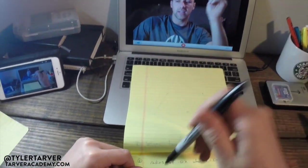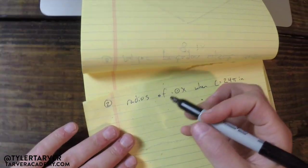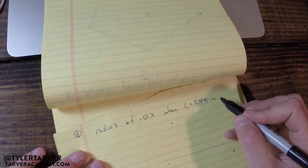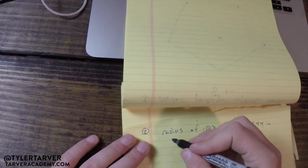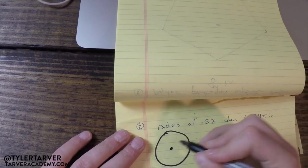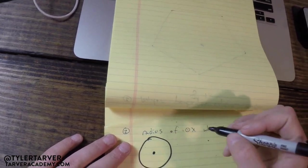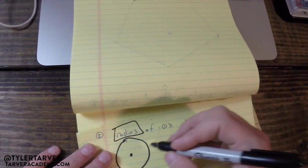We're going to find the radius of circle X when the circumference equals 24π inches. First thing I always do in problems is draw it out, write down the information I know, and figure out the information I don't know. We want to find the radius.